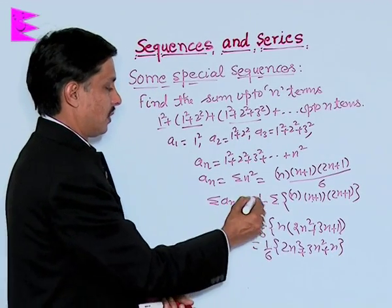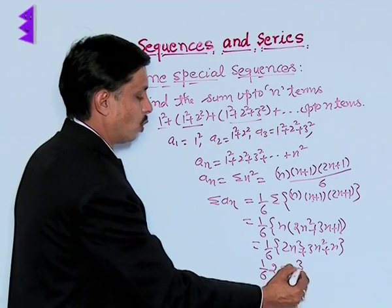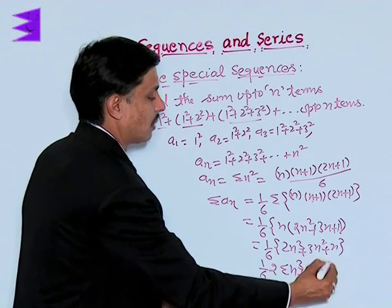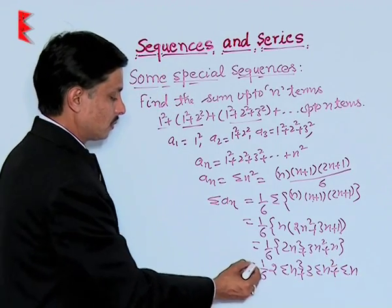So there, sigma this becomes 1 upon 6, 2 sigma n cube plus 3 sigma n square plus sigma n.